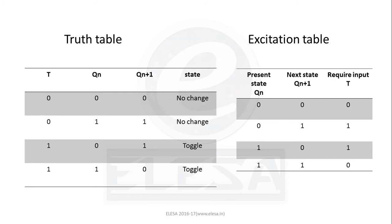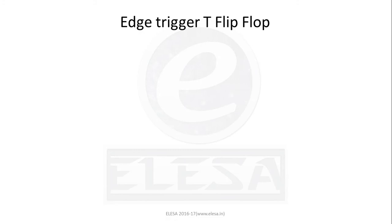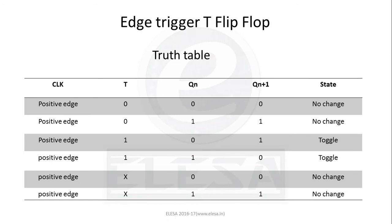In the excitation table, when the present state is 0 and the next state is also 0, the required input T is 0, and so on. The edge-triggered T flip-flop works similarly to the T flip-flop, with the difference that it works on the command of the clock input. When T is high, the flip-flop toggles on every rising edge of the clock pulse. When T is low, the flip-flop remains in its previous state. For the negative edge-triggered version, the transition occurs at the falling edge.